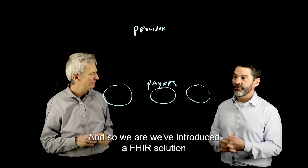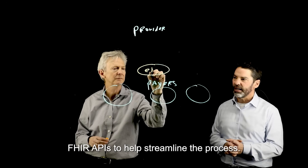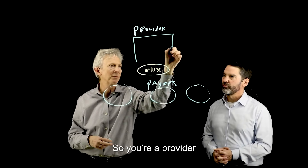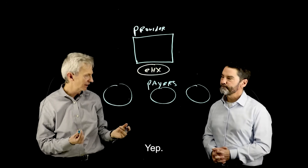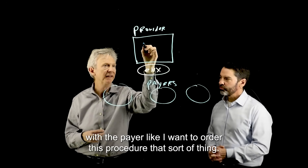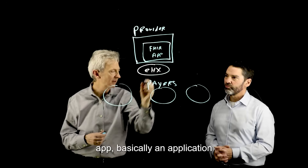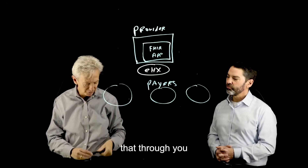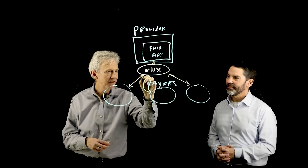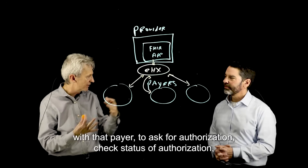We've introduced a FHIR solution — a technology solution that uses FHIR APIs to help streamline the process. As I understand it, it looks something like this: you're a provider in your EMR, and you basically want to interact with the payer — like, I want to order this procedure or that sort of thing. Within your EMR context, there's a FHIR app, an application that communicates with the payers on the back end to allow the user in the provider office to interact with that payer to ask for authorization, check status of authorization, that kind of thing.